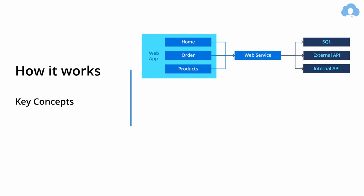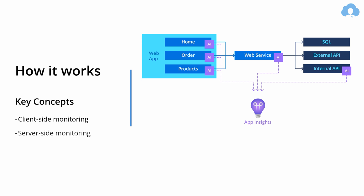You can set up Application Insights on your frontend pages for client-side monitoring — it works pretty much like Google Analytics, tracking user behavior and requests to the backend. You can also install it on your web service or internal APIs for server-side monitoring, and this works within Azure or non-Azure services because it's an SDK or agent you install. Note that you can't install it on external APIs or SQL if you don't have control over them, but it will still allow you to track dependency calls to those services.